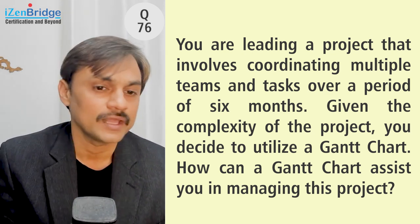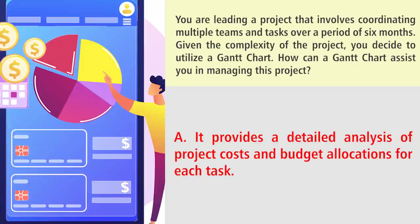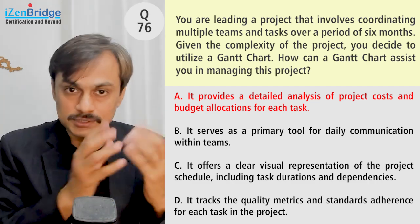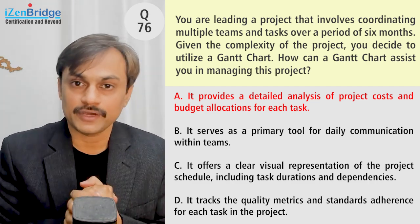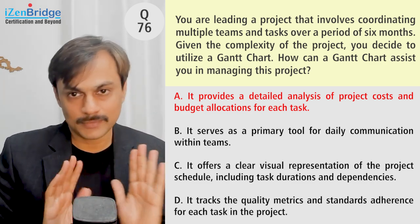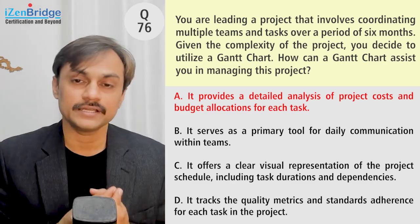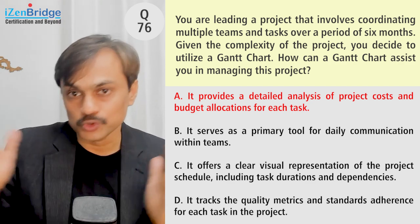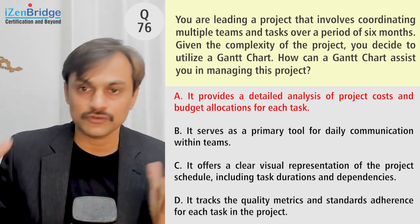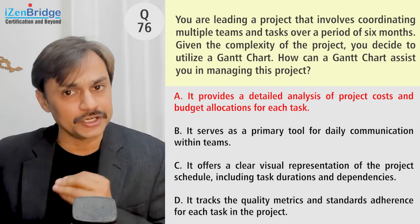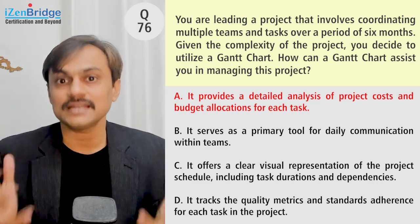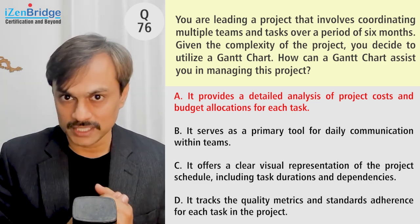Option A states it provides a detailed analysis of project cost and budget allocation for each task. The tool used for Gantt charts, for example MS Project or Primavera, may include costing information because it is integrated there. But the Gantt chart as a representation has less to do with costing — it has more to do with showing the timeline and critical path. So selecting a cost option is a little risky here because that is not the primary purpose of the chart.